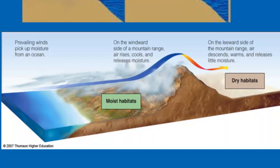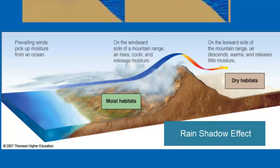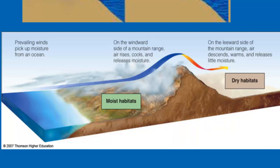Mountains can actually interrupt the flow of prevailing winds and the movement of storms. Warm air full of moisture can be trapped on one side of the mountain, causing that side to have a moist habitat, whereas on the other side it's going to be dry. This absence of rain on one side of the mountain is called the rain shadow effect.